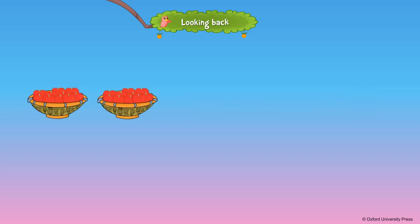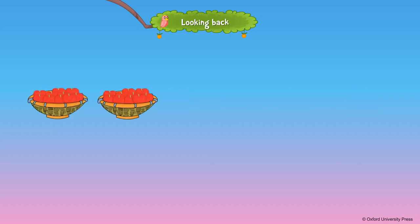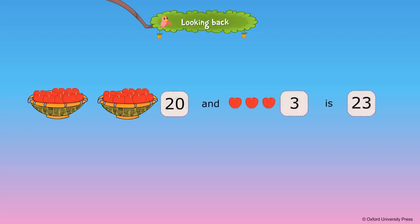If two more apples are added, we will have 22 apples. 20 and 2 is 22. If three more apples are added, we will have 23 apples. 20 and 3 is 23.